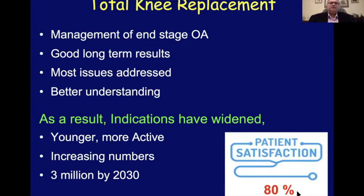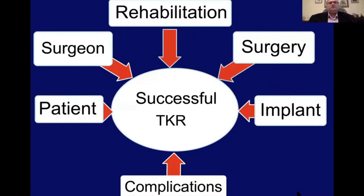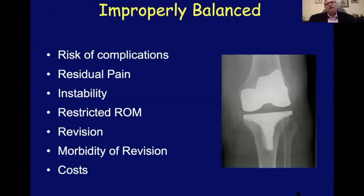We are doing total knee replacements in increasing numbers. It is estimated that by the year 2030, 3 million primary total knee replacements will be done across the world. However, only 80% of patients who have a total knee replacement remain satisfied. Successful total knee replacement is influenced by a number of factors ranging from the patient, the surgeon, the surgery, the implant, rehabilitation, and complications. An improperly balanced total knee replacement has an increased risk of complications — residual pain, instability, restricted range of movement, leading to revision, comorbidity, and significant financial impact.